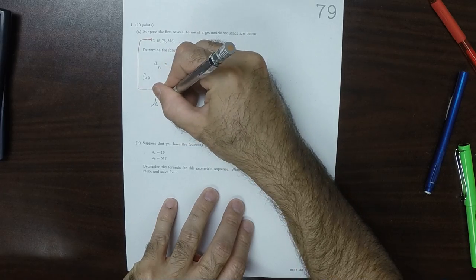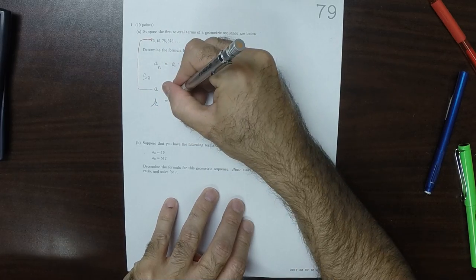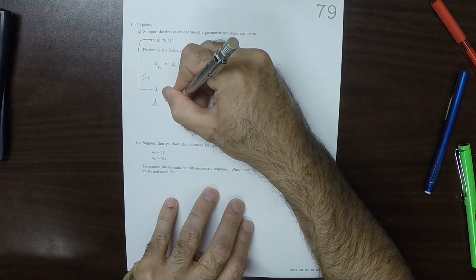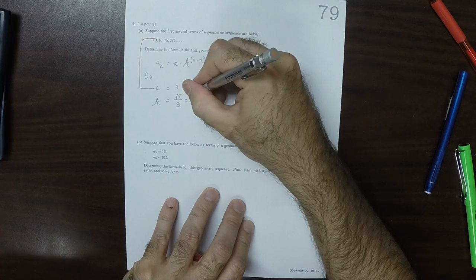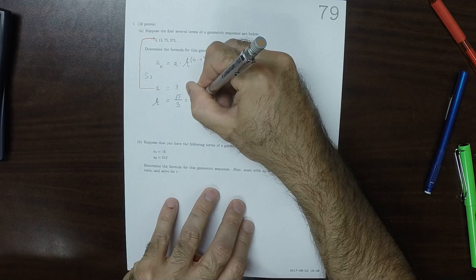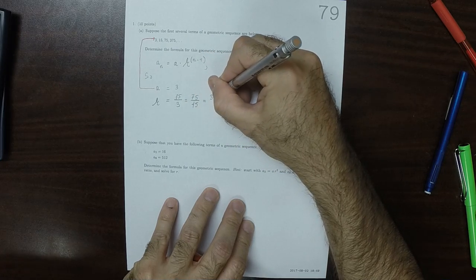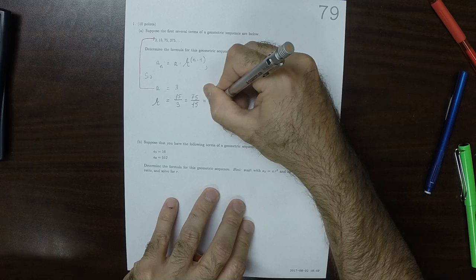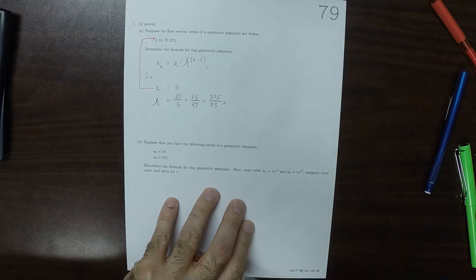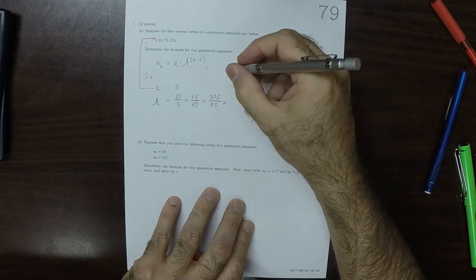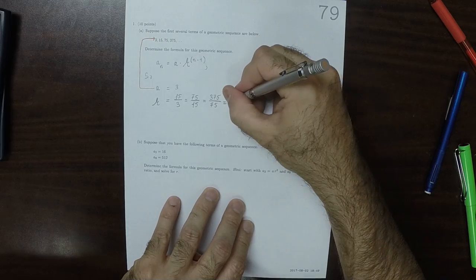And then r is the ratio of successive terms. So that would be 15 over 3, which is the same as 75 over 15, which is the same as 375 over 75. Those are all the same, and if we had more terms they'd still be the same. And that common ratio is 5.